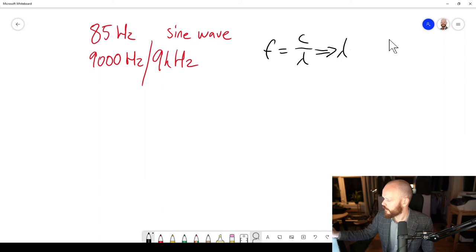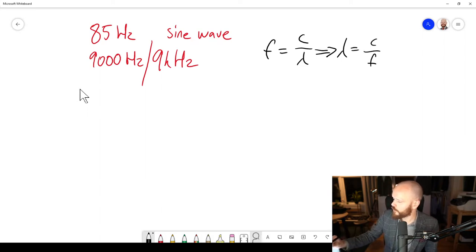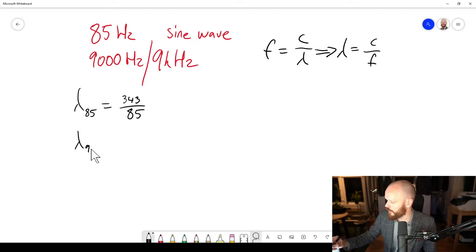So lambda 85 will be equal to c, speed of sound which is 343 meters per second, divided by f which is 85. And lambda 9,000 will be 343 divided by 9,000.